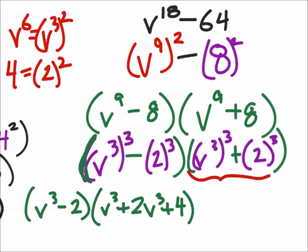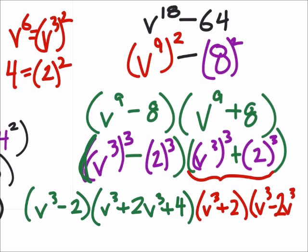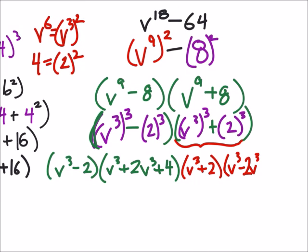And then this set of parentheses I'll do in red, we've got v cubed plus 2, and then multiply it by v cubed minus 2v cubed, more space, and plus 4.